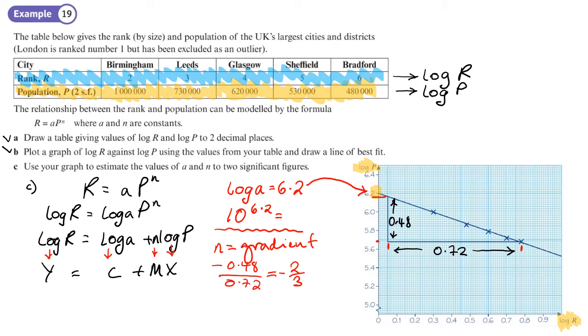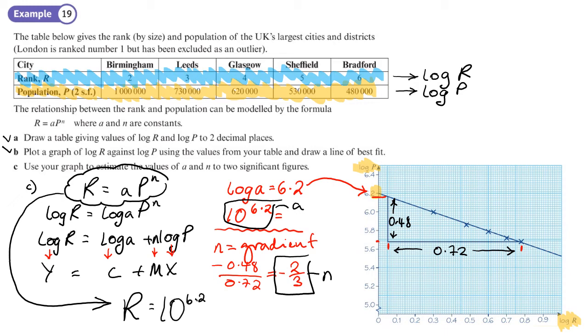That's handy as the gradient for our value of n. So we have a and we have n. So I'll just highlight them here. There's our n, here's our a. So if we wanted to write the full equation, we've answered the question. But going back to this, r equals a to the p to the power of n, that would be r equals, this is our a, 10 to the power 6.2 times by p to the power negative 2 thirds. So there we would have the full equation if we needed that.